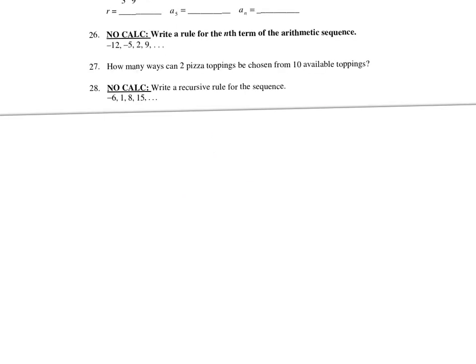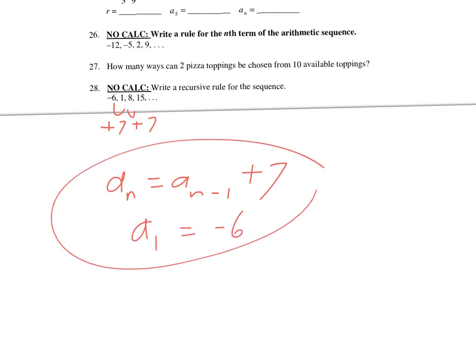Next, write a recursive rule. Tracking the pattern, it's consistently plus 7. So a sub n equals a sub n minus 1 plus 7. For the recursive formula, I also need to list a sub 1.